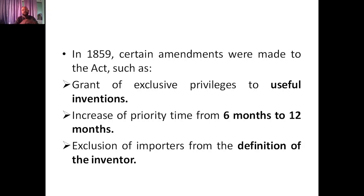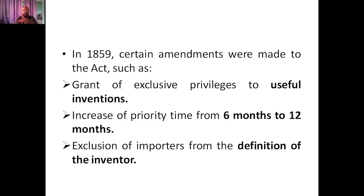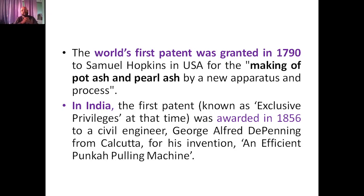In 1859, after almost three years, certain amendments were made to the Act, such as the grant of exclusive privileges for useful inventions, increase of priority time from six months to 12 months in order to encourage inventors, and exclusion of importers from the definition of inventors. If anyone brought a new product from outside India and wanted to sell it as an inventor, that was not possible.